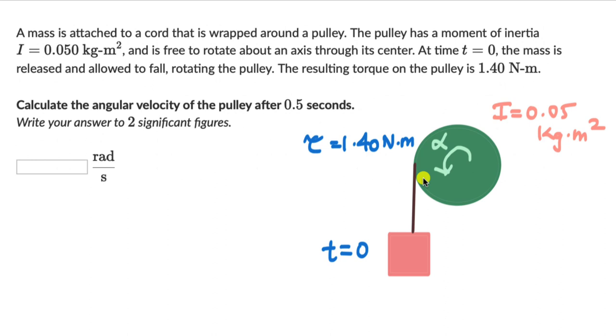Using the rotational version of Newton's second law, we can write tau equals I alpha. This is the rotational version of Newton's second law. We know torque, and here we know the moment of inertia.